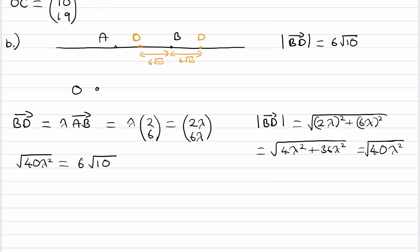I'm going to square both sides, so the left-hand side becomes 40λ². Square these two, that becomes 36 times 10, or 360.